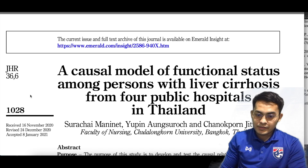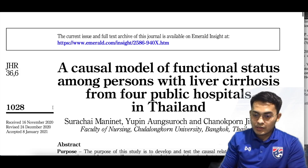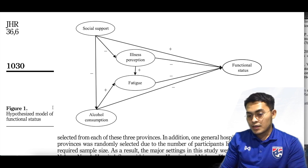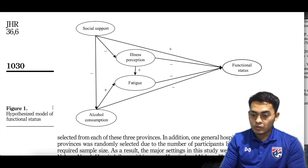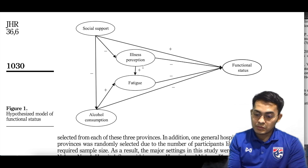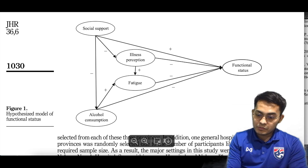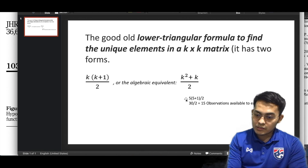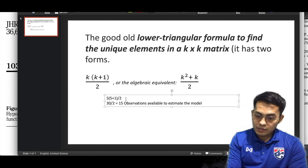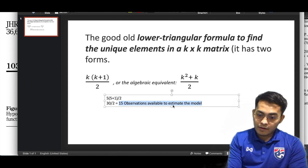First I would like to discuss what has been published in a paper. You can see on the screen the first paper from my colleague. Looking at the variables in the model, there are five variables. We would like to calculate the observations and after that the parameters. The formula gives us 15 total observations available to estimate the model with five variables.